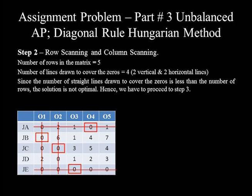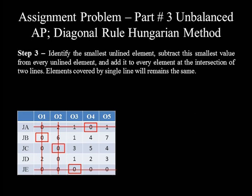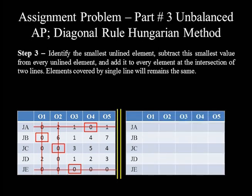Step 3: identify the smallest unlined element, subtract it from every unlined element, and add it to every element at the intersection of two lines. Elements covered by a single line are copied to the next table unchanged. Let's copy a blank table on the right-hand side. First, copy elements covered by a single line: 1, 0 and 1 in row 1; 0 and 6 in row 2; the two zeros in row 3; 2 and 0 in row 4; and the three zeros in row 5.